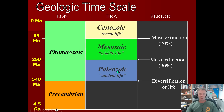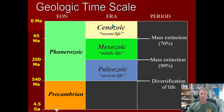Using the same suffix 'zoic,' meaning life: Paleozoic means ancient life, Mesozoic means middle life, and Cenozoic means recent life — that's how these break down in terms of word origins. The Cenozoic goes from about 65 million years ago to today. The Mesozoic goes from about 250 million years ago to 65. And then the Paleozoic goes from about 540 to 250 million years ago.